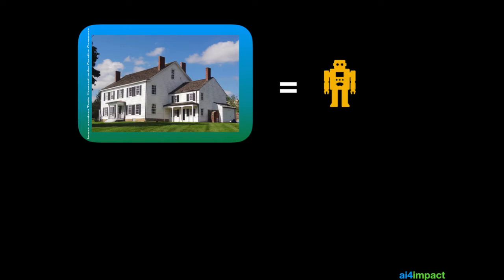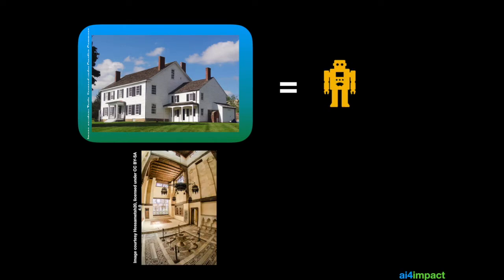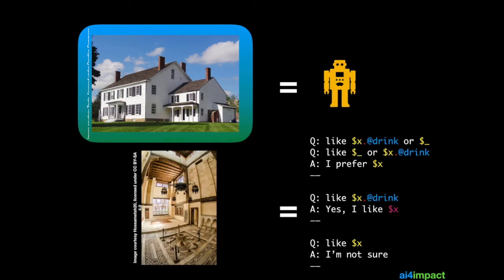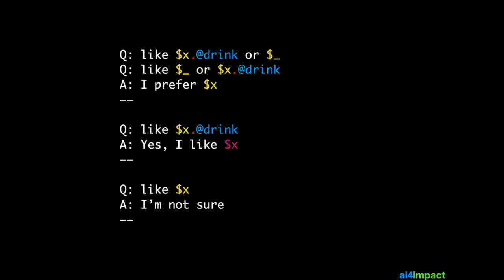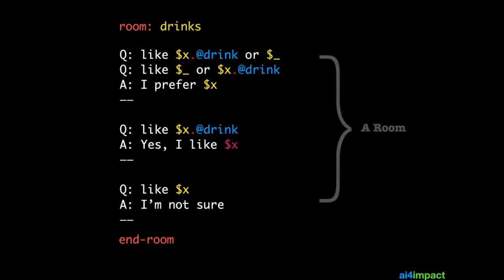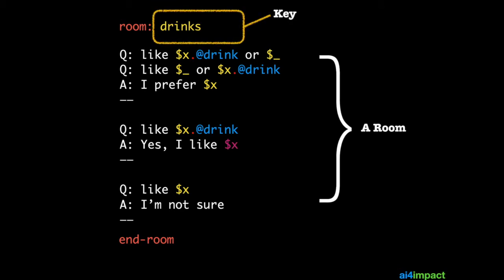What has this got to do with chatbots? The house is a lot like our chatbot, and each room can be a collection of templates. Let's say I have a collection of three templates that all refer to matching drinks. To make it into a room, I put 'room:' with the name of the key for that room and 'end room' like so. These three templates now define a room, and the key to the room is just 'drinks'.